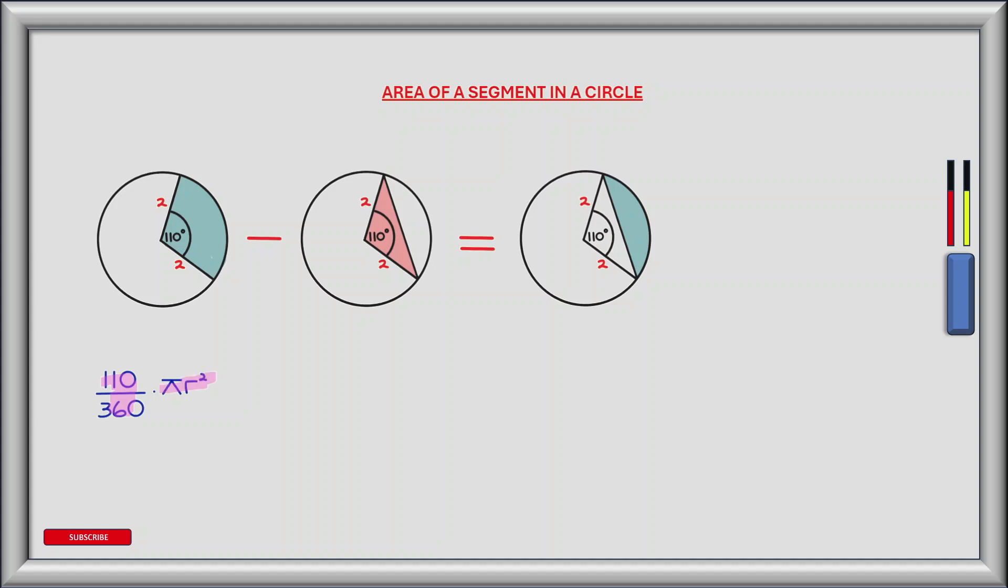The area of a circle is pi r squared, where the radius r in this case is 2. So the sector area is given by 110 divided by 360 multiplied by pi r squared. If we plug in the value for r and square it, we get 4. Divide numerator and denominator by 10, we get 11 divided by 36 multiplied by pi multiplied by 4. Dividing numerator and denominator by 4, we get 11 pi divided by 9. And this is the area of the sector shaded in blue, shown in circle 1.